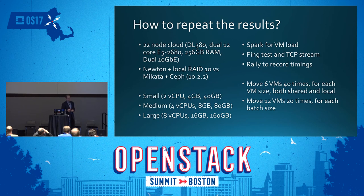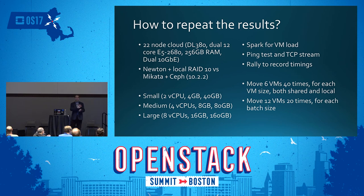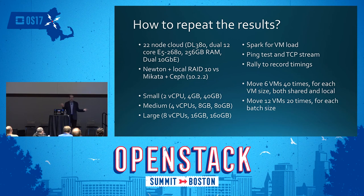There's going to be a blog post describing all the details. We used small, medium, and large VMs. The disks were 40, 80, and 160 GB, so the actual amount being copied was about 20, 40, and 80 GB. For the workload on the VM, we used Apache Spark to generate memory dirtying during the process to make sure the VM didn't move really quickly. During testing, we did ping tests and had a TCP stream open with the VM to check if networking was interrupted. We didn't see any TCP drops or any ping test drops, though we were using regular provider networks.